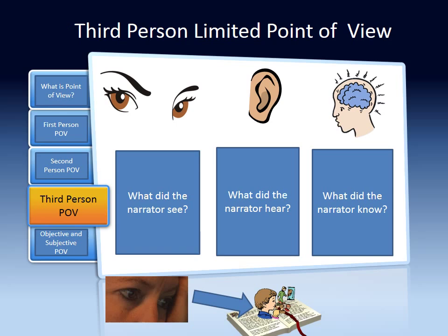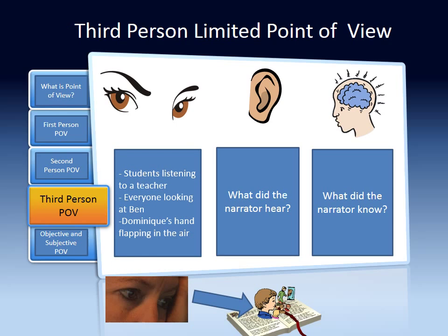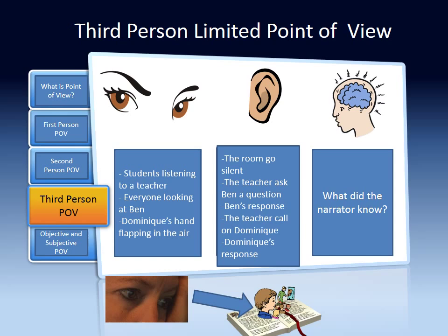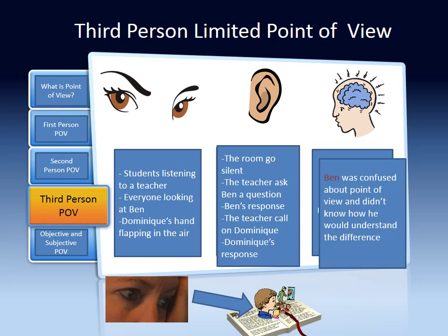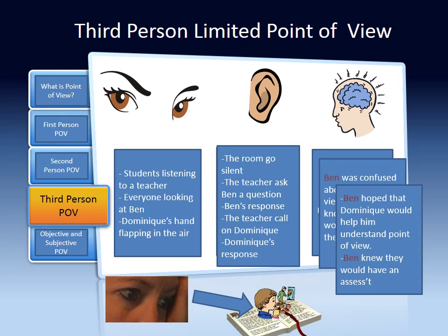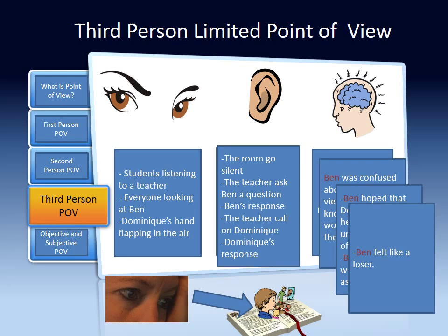Let's examine what the narrator saw. The narrator saw all of the students listening to a teacher, everyone looking at Ben, and Dominique's hand flapping in the air. What did the narrator hear? The narrator heard the room go silent, the teacher asked Ben a question, Ben's response, the teacher call on Dominique, and Dominique's response. Now let's examine what the narrator knew. The narrator knew that Ben was confused about point of view and didn't know how he would understand the difference. The narrator did not know the thoughts of any other characters, only the thoughts of Ben. The narrator knew that Ben hoped that Dominique would help him understand point of view, and that Ben knew they would have an assessment. And finally, the narrator knew that Ben felt like a total loser.